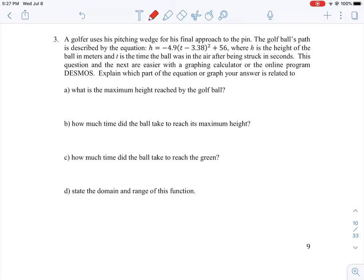The equation is given as h equals negative 4.9 times t minus 3.38 squared plus 56. That's in the same form as our general parabola equation. We know right off the bat this is a parabola facing downwards, which means it's going to have a maximum height and then come back down.